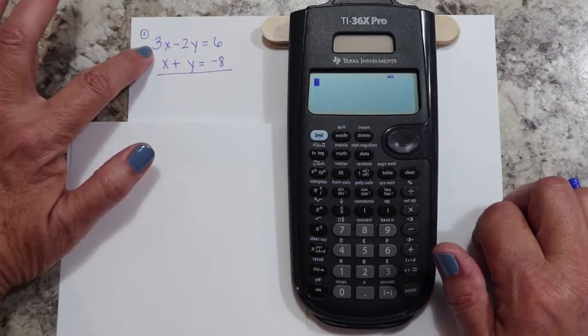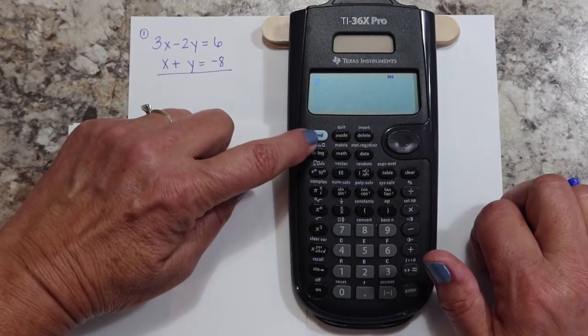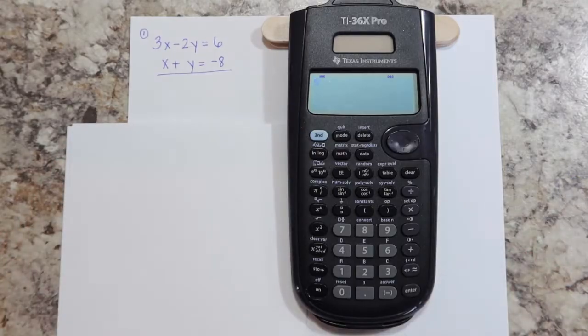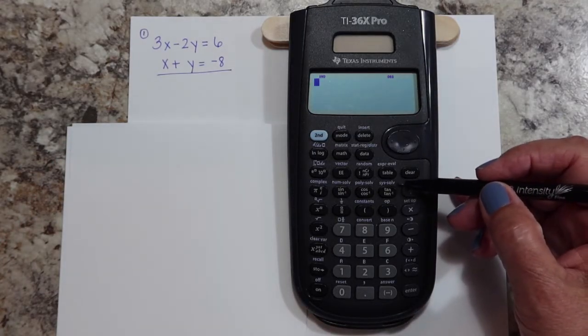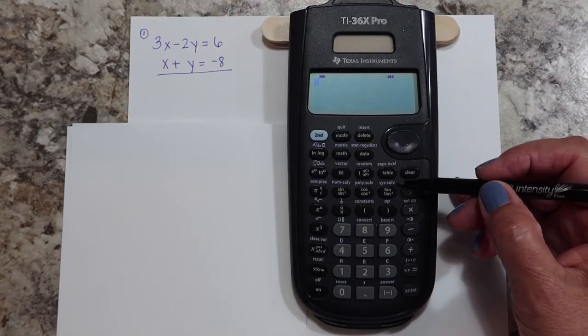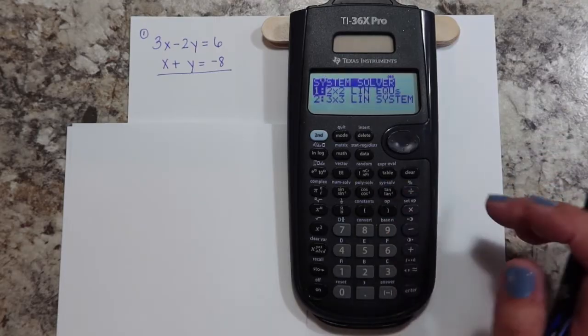To enter the system solver menu, you're going to hit the second button, and then right here above the tangent inverse tangent button, it says 'system solve' in blue. So we're going to hit that button.